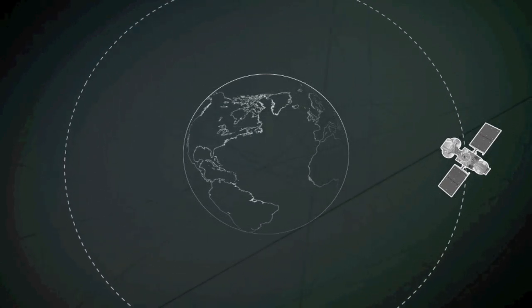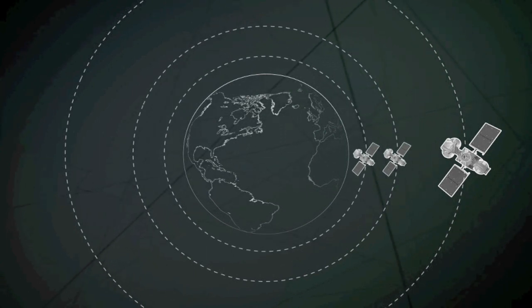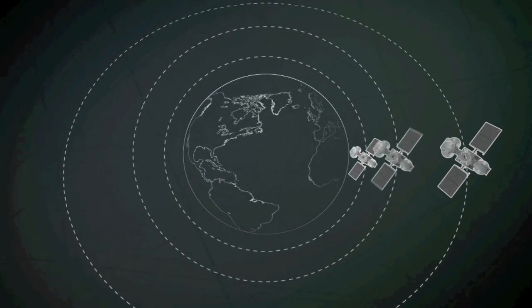Orbits that are not geostationary are also used for communications. They involve constellations of satellites circling closer to Earth. More satellites are needed, but each is less expensive and relays signals more quickly.